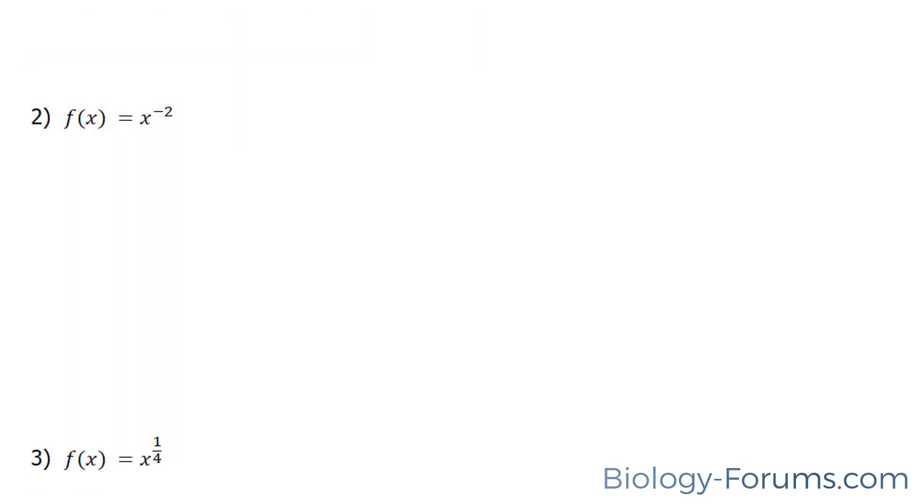In question number 2, we have the function x to the power of negative 2. Once again, we will add 1 to the exponent, leaving us with x to the power of negative 1. Then you take that number negative 1 and put it underneath, negative 1 at the bottom. The answer to this is negative 1 over x plus c.